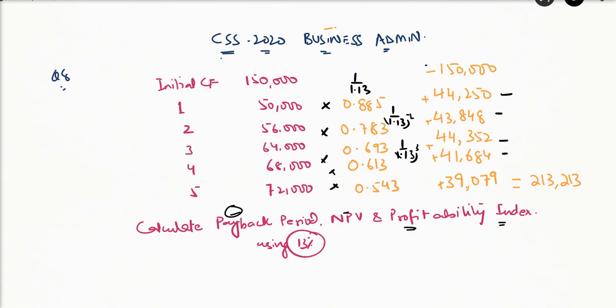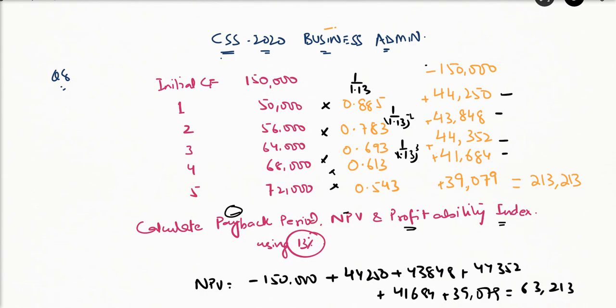So NPV is what? NPV is the net present value. It is minus 150,000 and adding all the figures. So we are left with 63,213, that is positive.